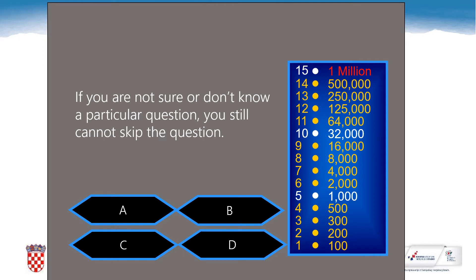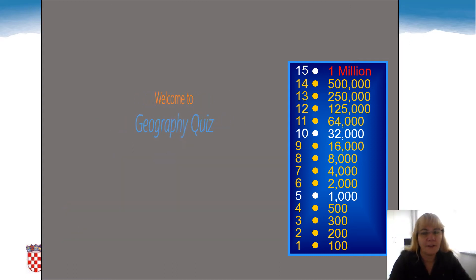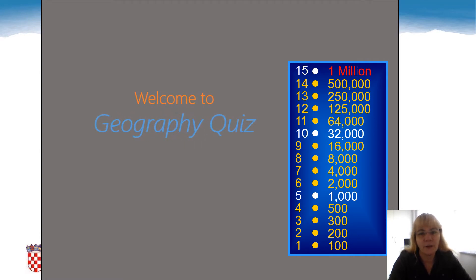You cannot move on to the next level if you don't copy an answer — the wrong one or the correct one. Keep track of your progress in your notebooks. The winner is the student with the highest score at the end of the game. And remember, play fair. If the answer is the correct one, you win 100 points, and the next level 200 points and so on. You cannot use the options 50-50, phone a friend, or ask the audience. However, you can work in pairs, but you have to agree on each answer before giving the answer.